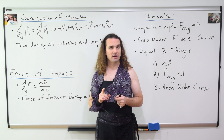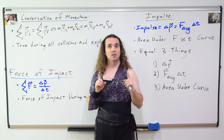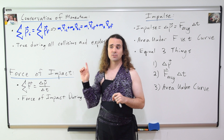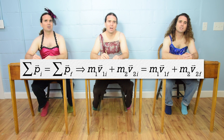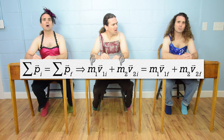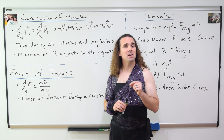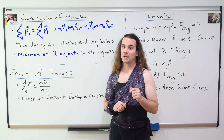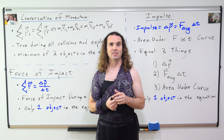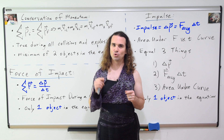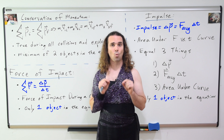Now I want to talk about a major difference between the conservation of momentum equation and the other two equations — the force of impact equation and the impulse equation. How many objects are in the conservation of momentum equation? It looks like there are two objects to me, mass one and mass two. There could be more than two objects, right? Exactly. There are a minimum of two objects in the equation for conservation of momentum. However, the force of impact equation and the impulse equation both only have one object in them. I often see students trying to take the masses from two different objects and put them into the force of impact and impulse equations, but you can't. Both of them only have one object in them.